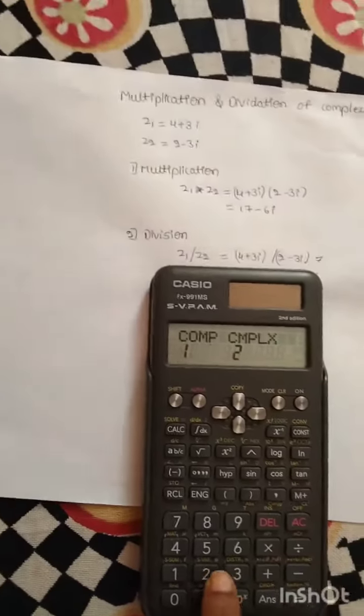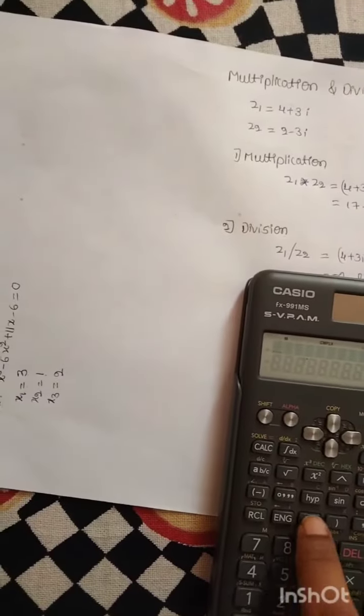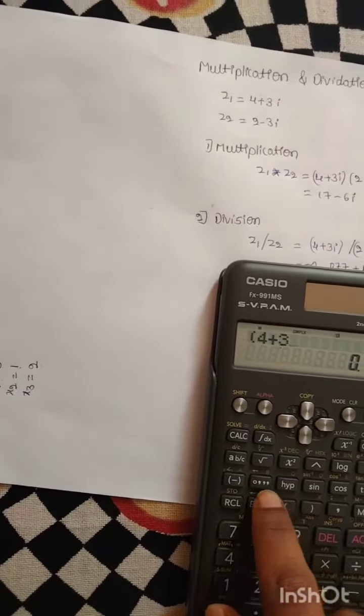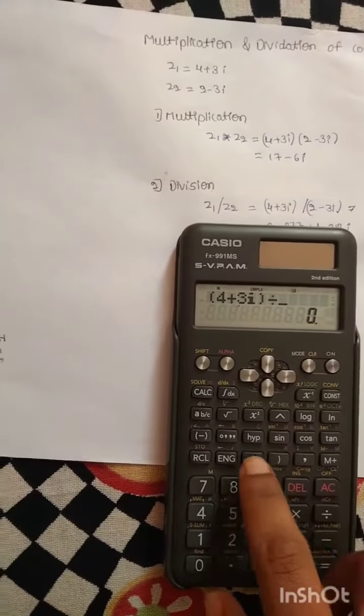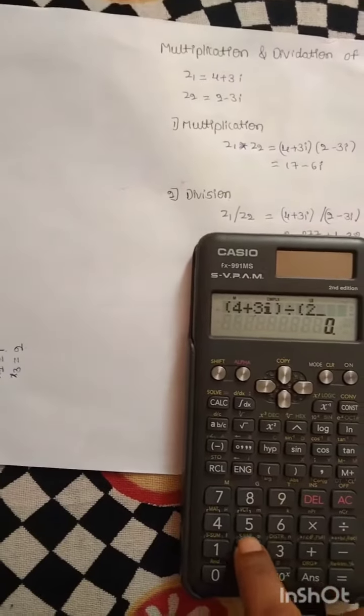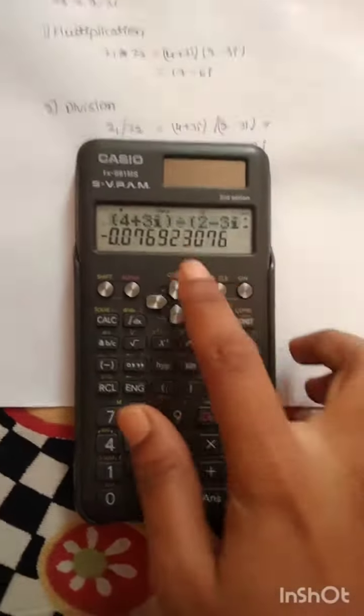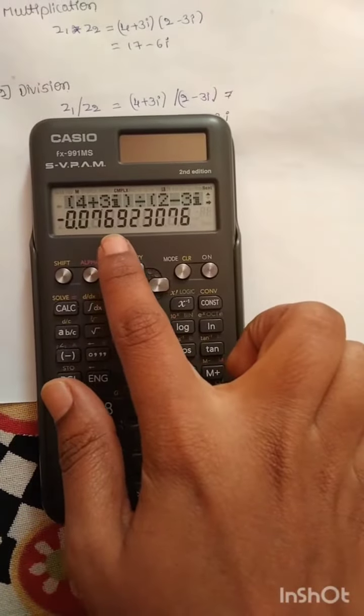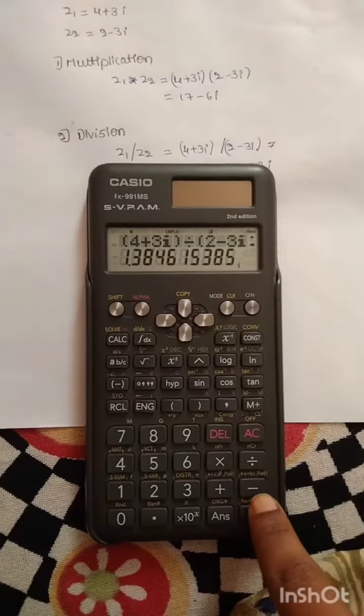Enter the mode complex and enter z1 and z2. z1 is 4 plus 3i divided by z2, 2 minus 3i. The real part is 0.076. To find the imaginary part, shift equals button.